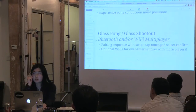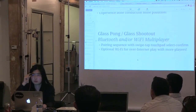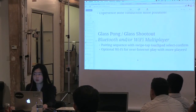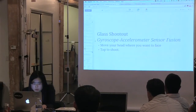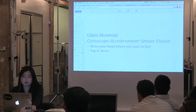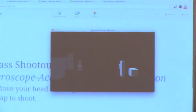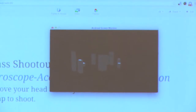Both Glass Pong and Glass Shootout will have multiplayer mode using Bluetooth and Wi-Fi. There are RF chips on this device for Bluetooth and Wi-Fi, but not for 3G or 4G — so you always have to keep it paired to a Wi-Fi network to use the internet. Glass Shootout uses sensor fusion: you move your head to aim and shoot things. The app goes to sleep because I forgot to set the manifest flag.